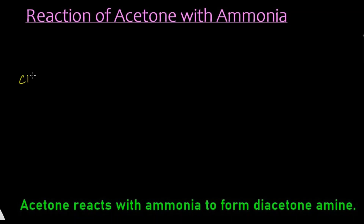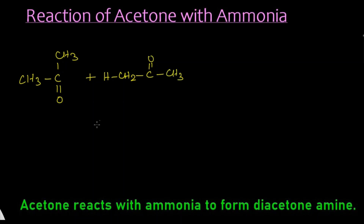CH3-C double bond O-CH3 — this is acetone. I am writing one more acetone: CH3-C double bond O, and splitting the CH3 as H into CH2-C double bond O-CH3. Two molecules of acetone with ammonia NH3 — for convenience I am writing NH3 as HNH2. We are going to heat this mixture.